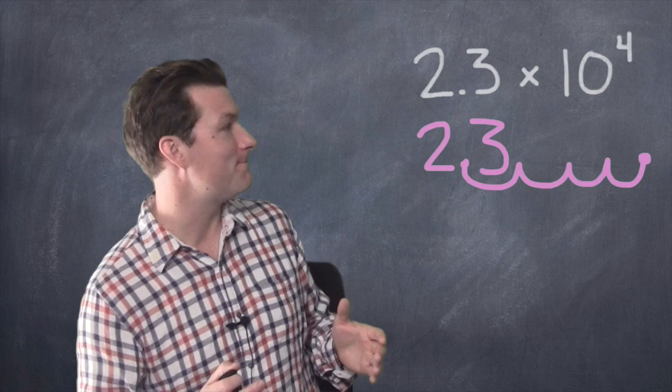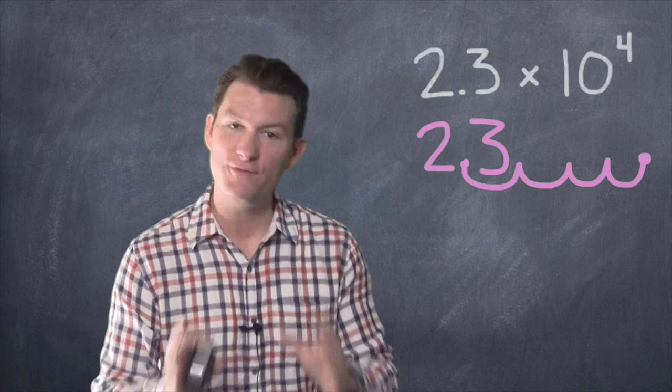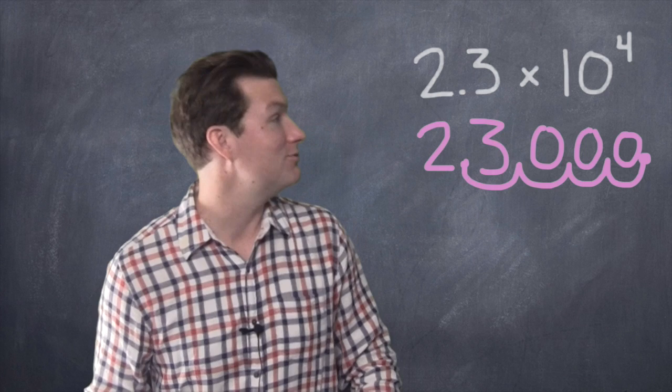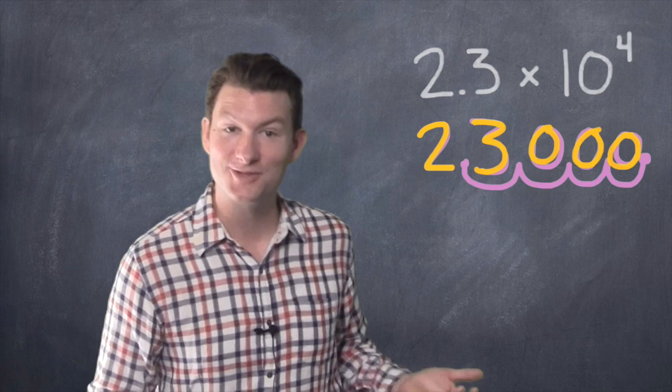Now, you see those little bathtubs that you made when you're moving the decimal point to the right? Fill each of those bathtubs with a zero, and let's see what number we found. We got 23,000. You did it. 2.3 times 10 to the fourth is another way to write 23,000.